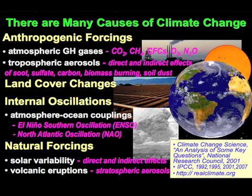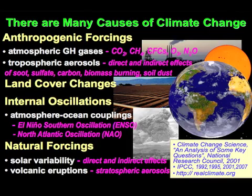We also have internal oscillations of the climate system itself. For example, when there are big changes in the surface temperature or the ocean temperature in the Pacific, this affects the global signal. There's also the North Atlantic Oscillation. So the challenge for the sun, and understanding the response of the climate system to the sun, is a big challenge.